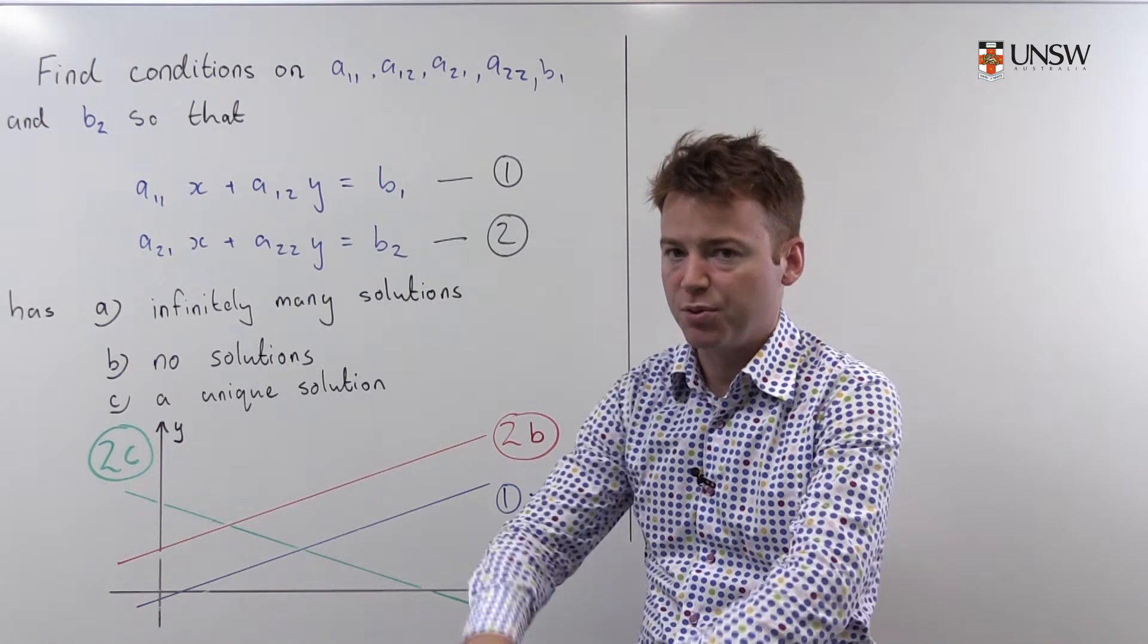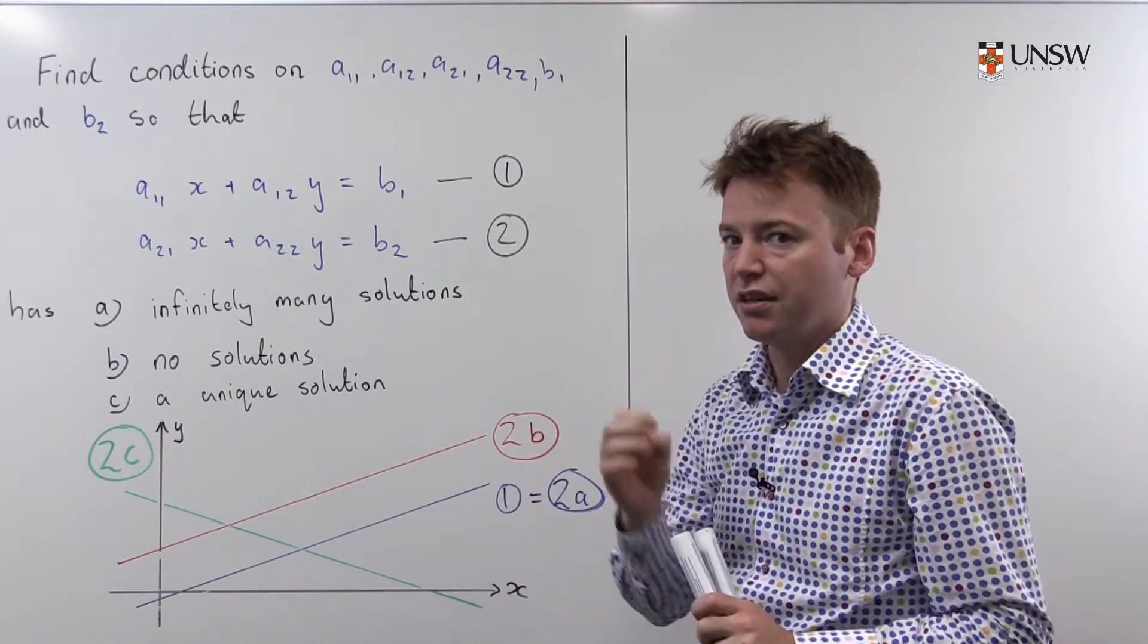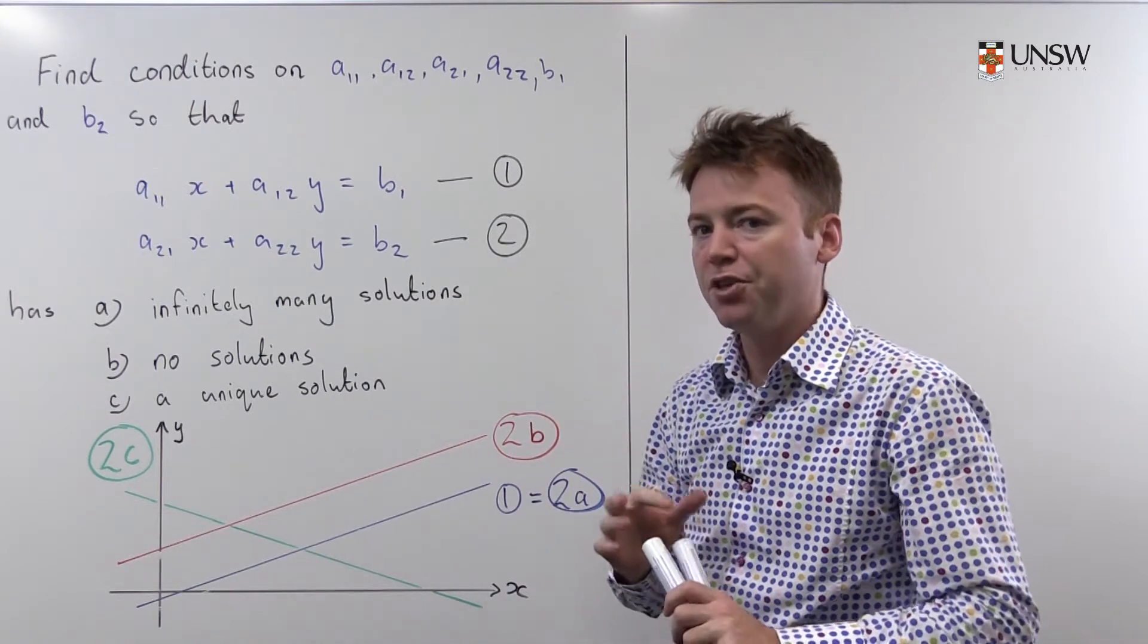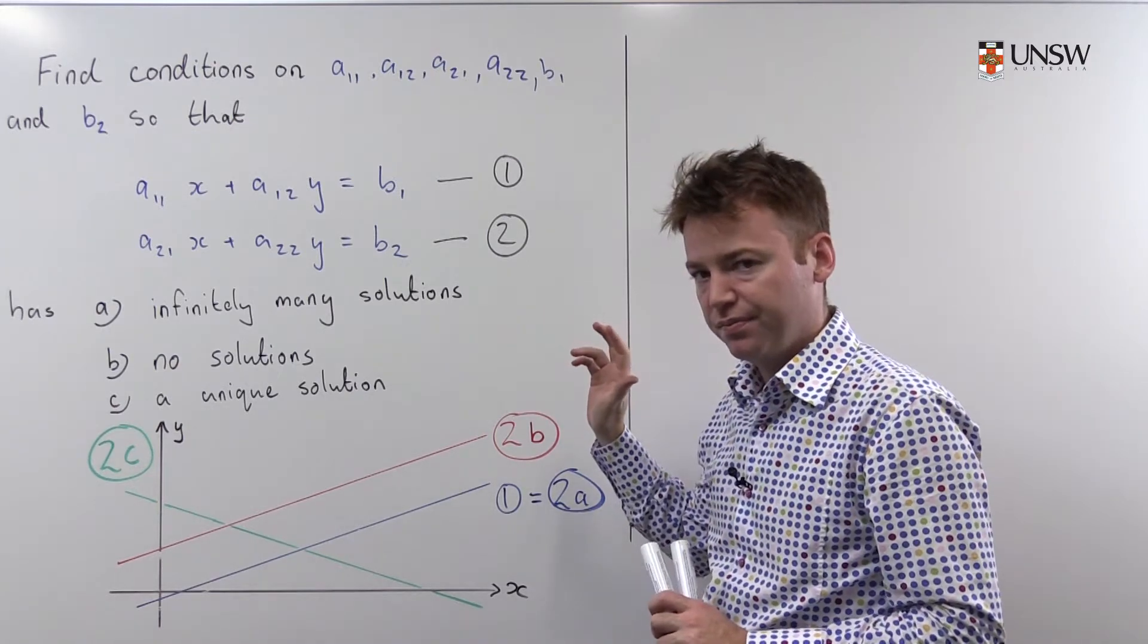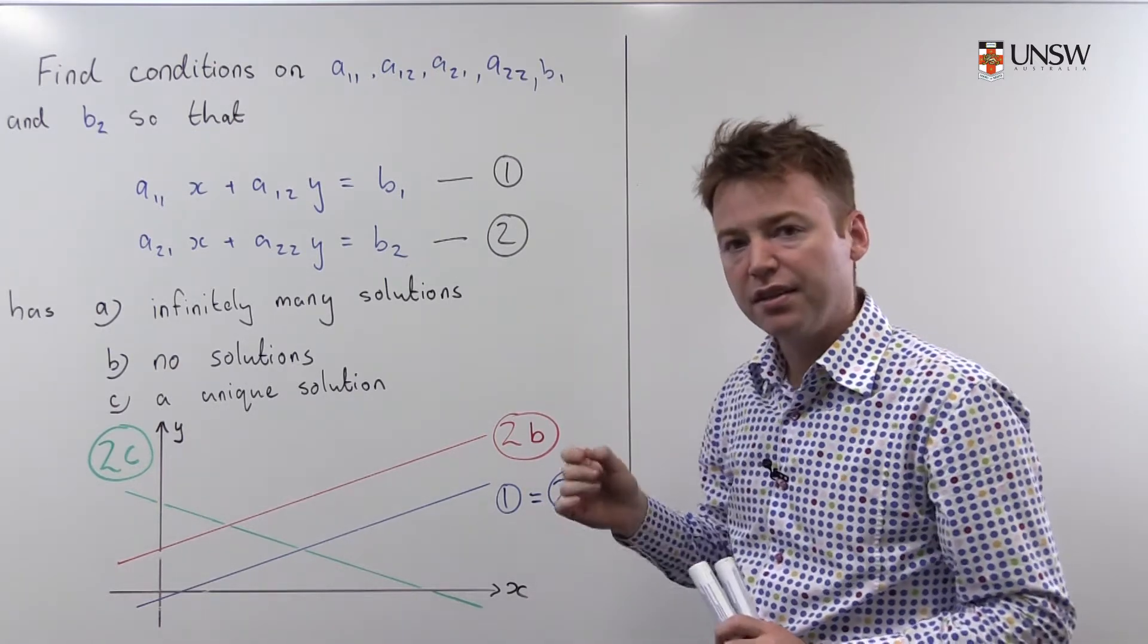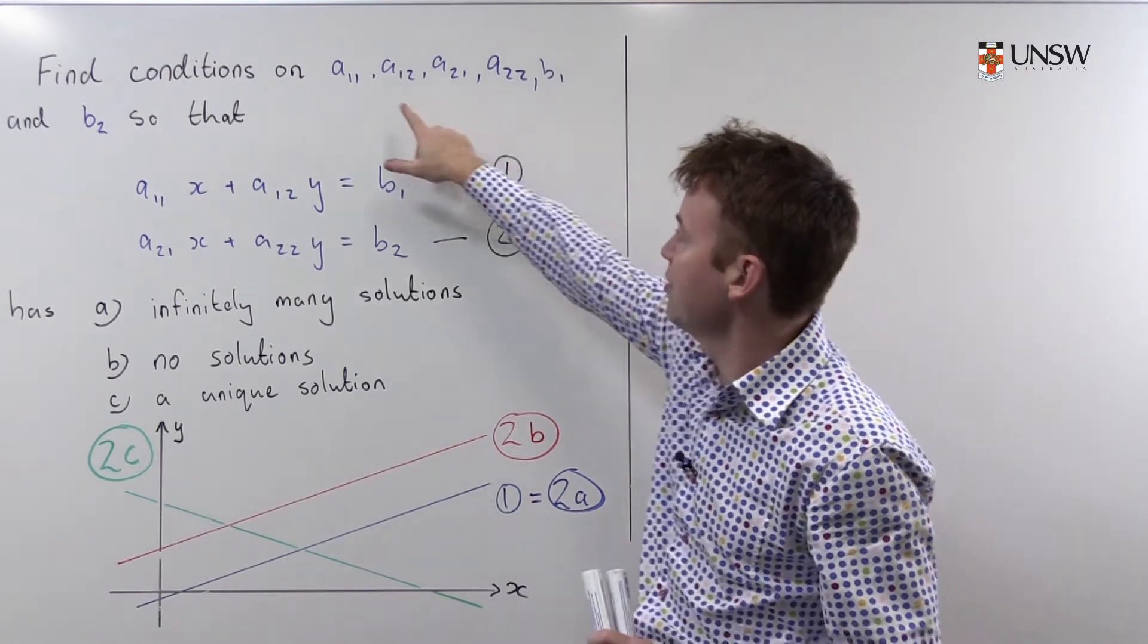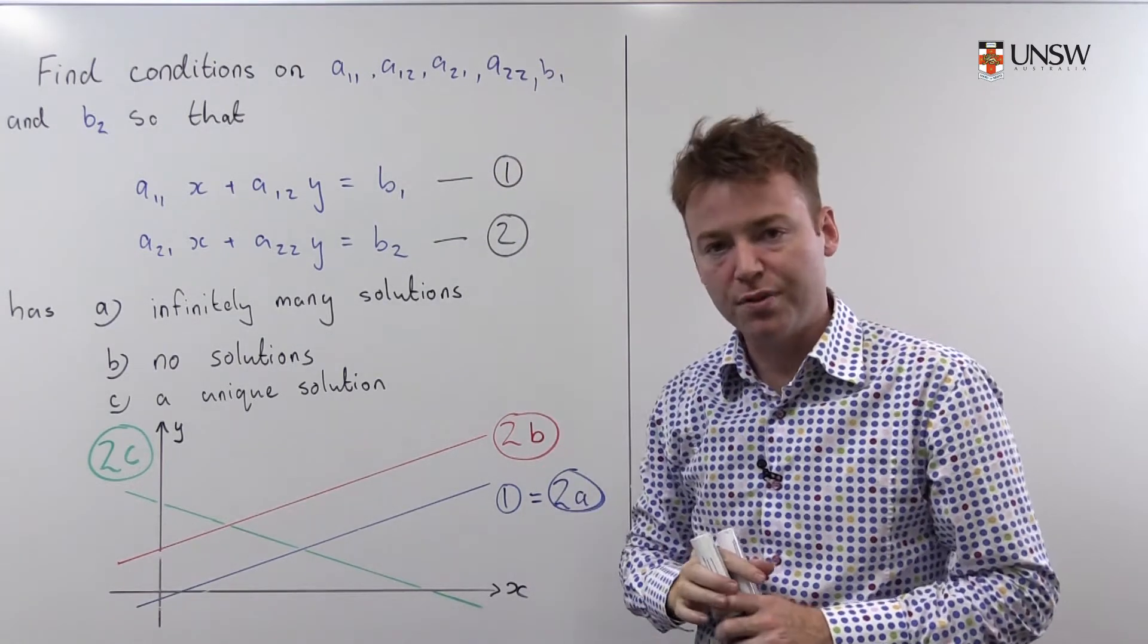Let's go back way back in time to when you first began solving linear equations simultaneously. You may have noticed that there are three possible outcomes of this process. In this video we're going to explore these three possible outcomes in terms of generic coefficients on two straight lines.